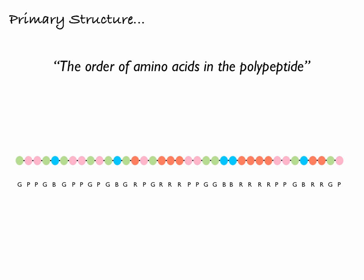For this particular polypeptide, if I wanted to replicate it I would need the exact same order of amino acids — represented here by a specific sequence of colours: green, pink, pink, green, blue, green, pink, pink, green, blue, green, red, pink, green, red, red, pink, pink, green, green, blue, blue, red, red, red, red, pink, pink, green, blue, red, red, green, pink. Obviously amino acids aren't colours, but this illustrates the point — the primary structure is the precise order of the amino acids.